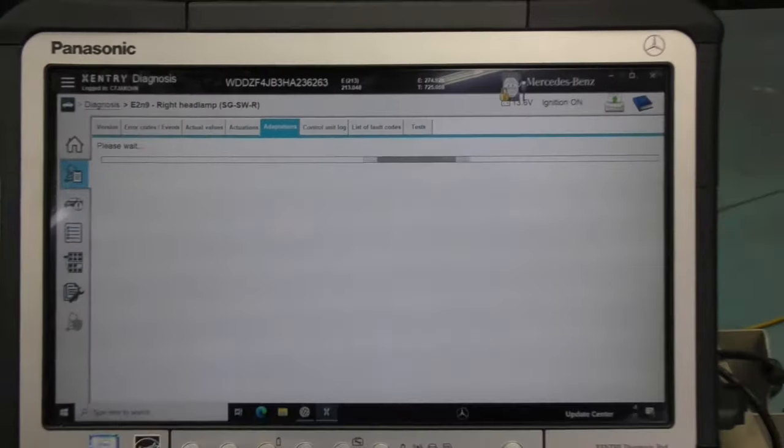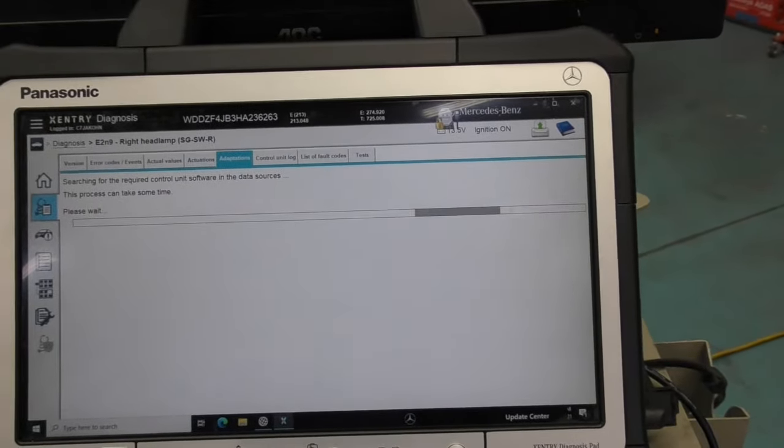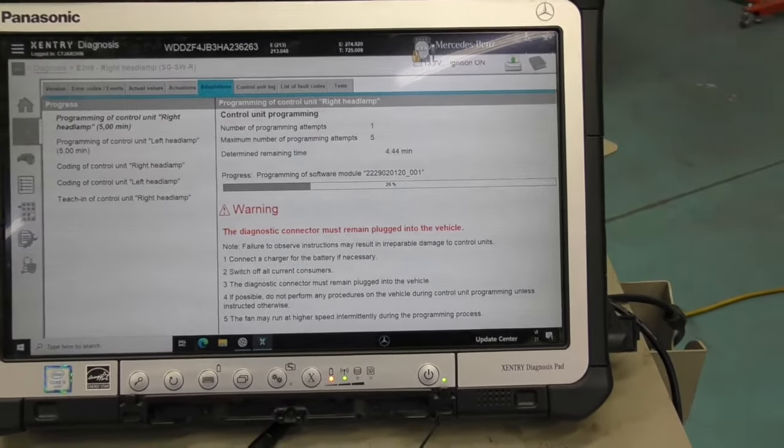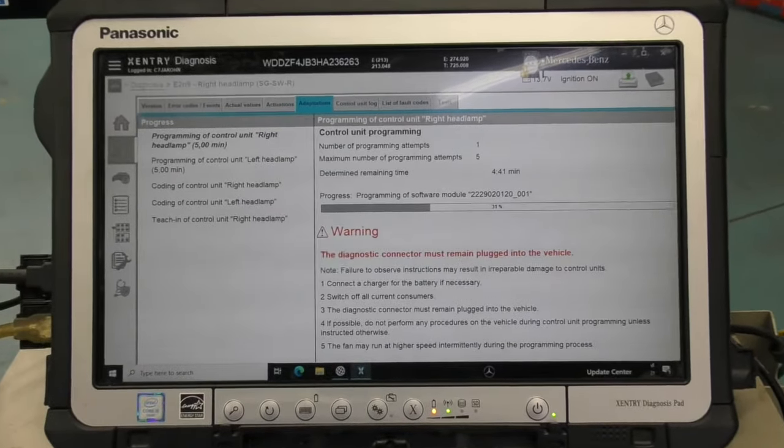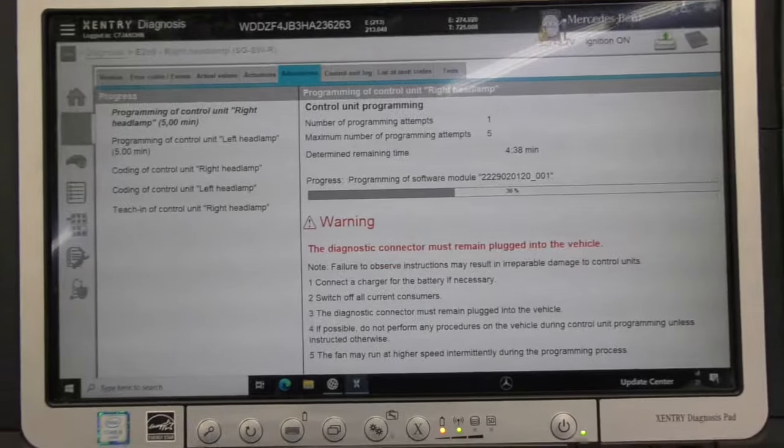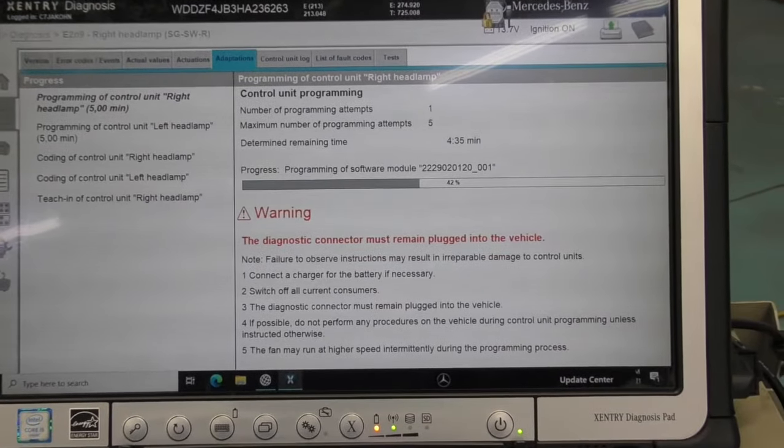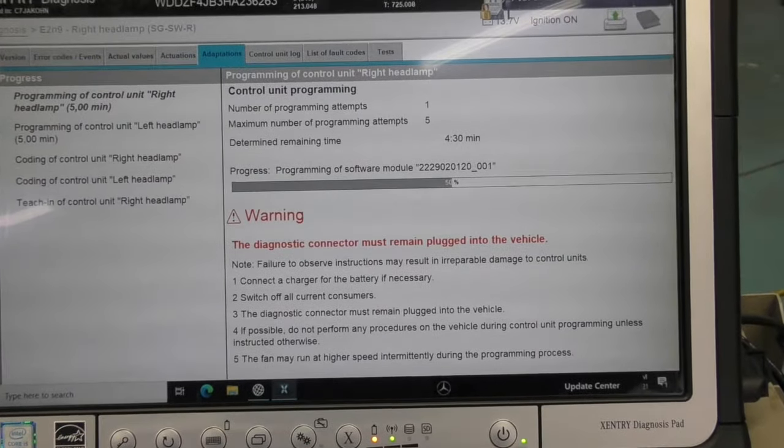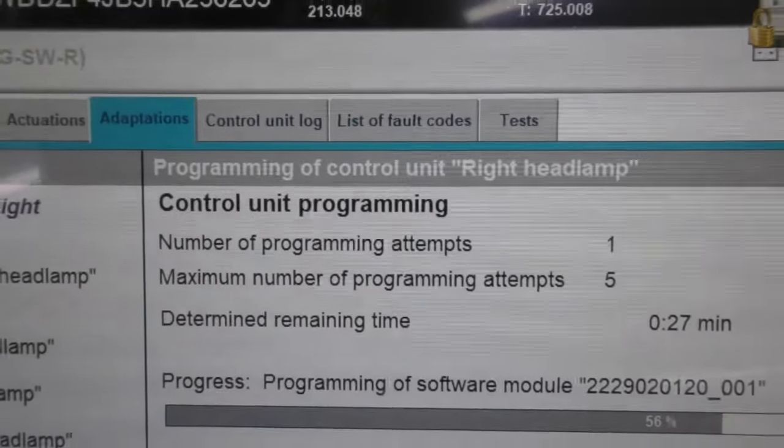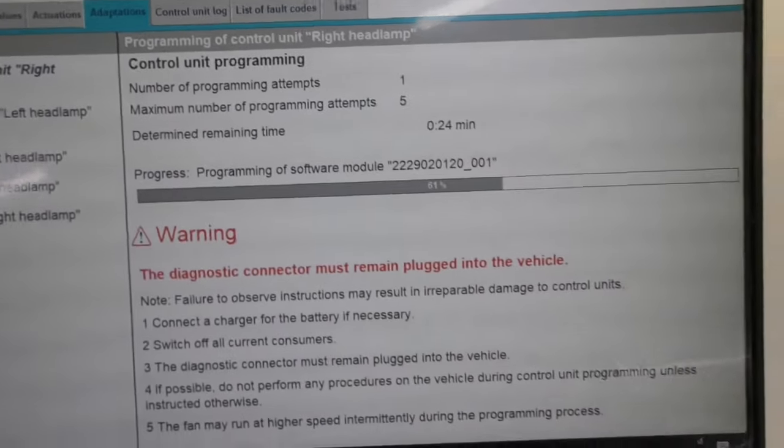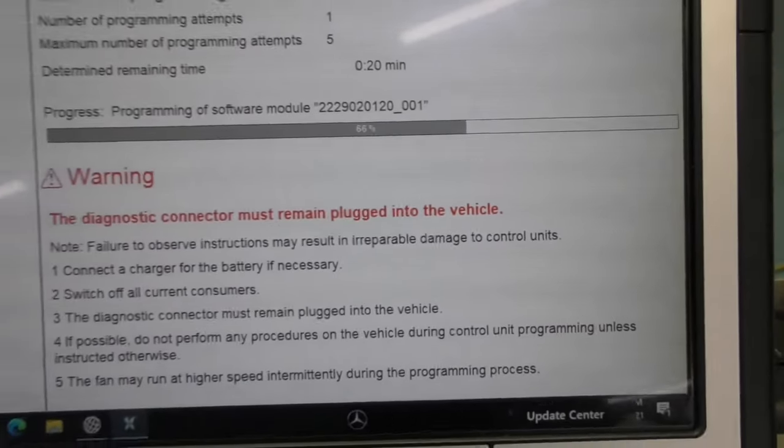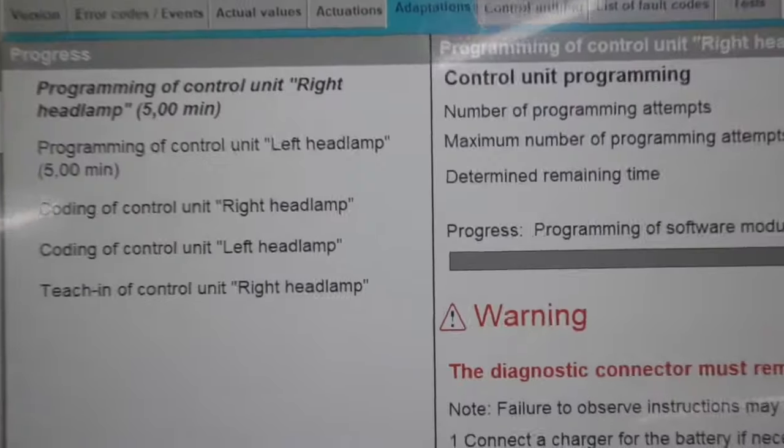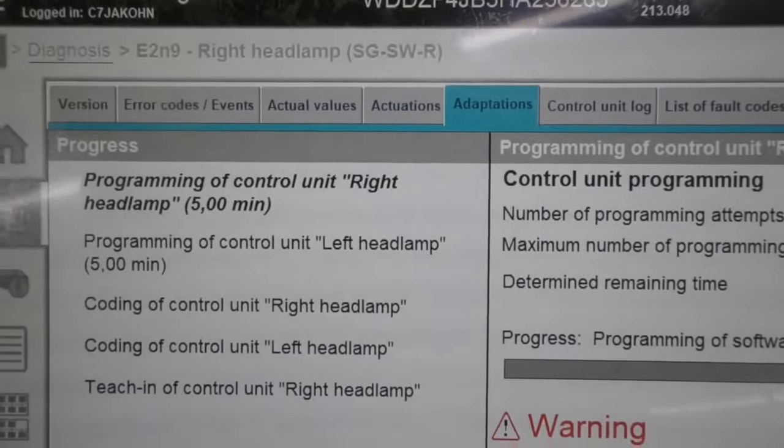I cut this video to shorten it—it takes five minutes to program each headlight. As you look at the right side of the screen, it has to match the software with the left original headlight, so it's going to program both the right and left headlights making sure they have the latest software. I don't know what software the engineers have decided to come up with—it is a headlight, an LED light that lights up the road at night. How much software goes into it? Absolutely ridiculous.